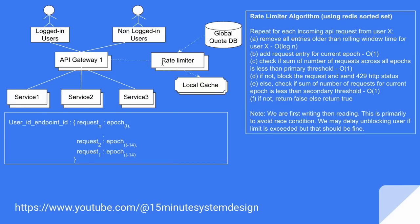The API gateway checks with the help of the rate limiter whether a particular request needs to be passed or blocked. The rate limiter will first load all the quota — all the primary and secondary rate limits — into cache. It will also maintain all sliding windows per user level in cache.